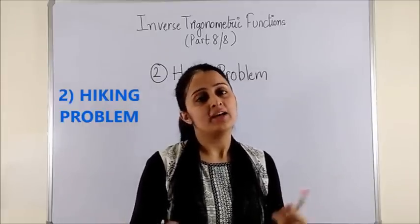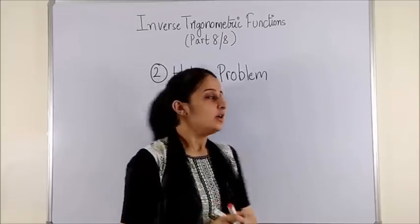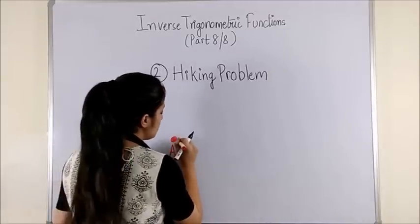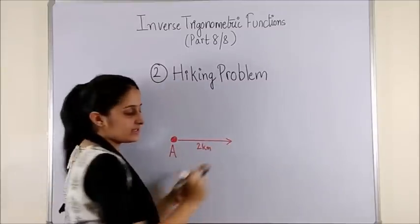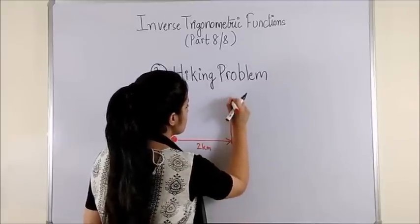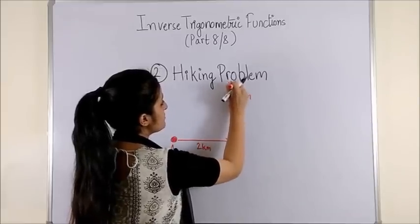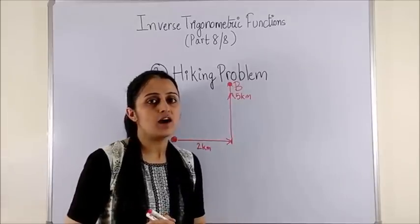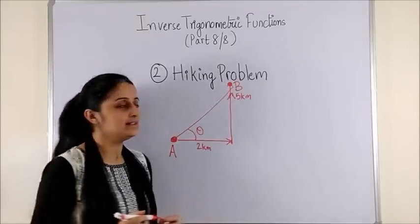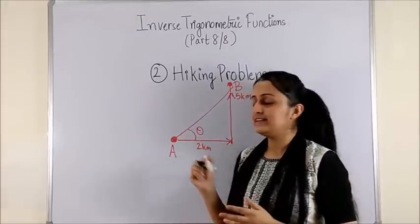Second, the hiking problem. Suppose you went on a hiking trip and started at point A. You are given directions to move 2 kilometers east, reach a position, then move 5 kilometers north and stop — point B becomes your destination. You want to know how steep your hike was. Calculate angle theta by considering the trigonometric triangle and taking the inverse.